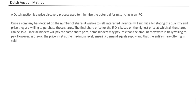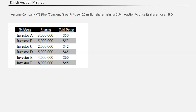Let's discuss how this process works with an example. A company wants to sell 25 million shares using a Dutch auction method in an IPO. On a particular day, bids are received from investors A, B, C, D, E, and F, all participating with different prices and different number of shares. Rule number one: you start the Dutch auction method from the top price. The top price is 60.